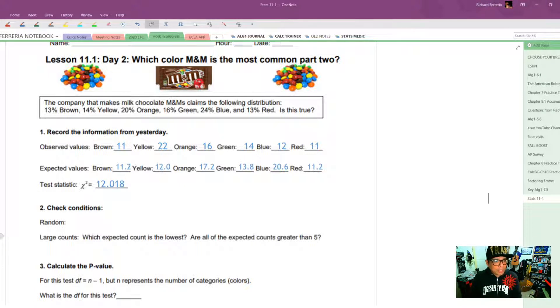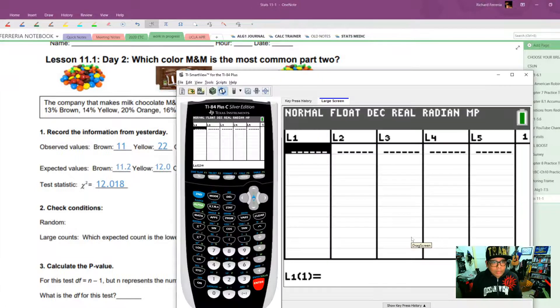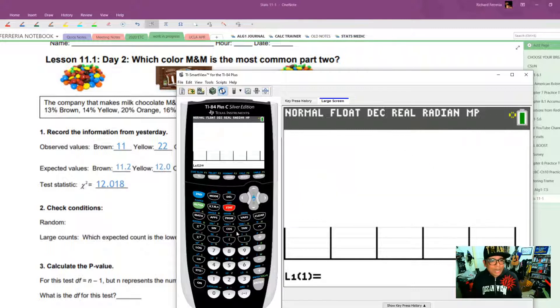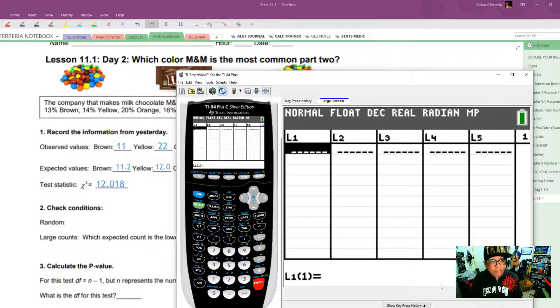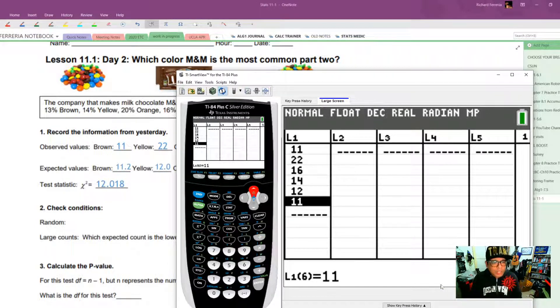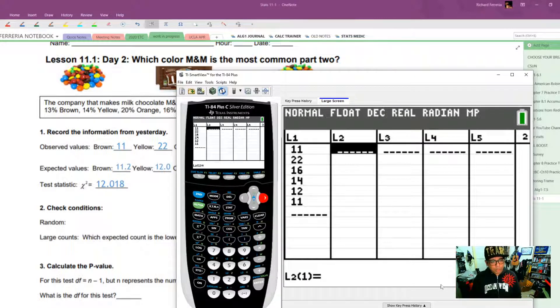And so the chi-square test statistic that we got here was 12.018. So let's take a look at how to do this on the calculator. First things first, get yourself into an empty list by clicking stat and then number one, edit. And then you're going to put all your observed values in L1.